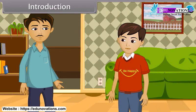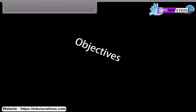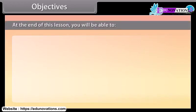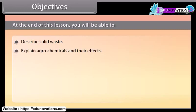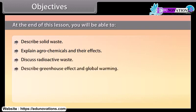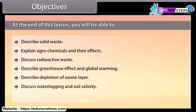In this lesson, you will learn about environmental issues. At the end of this lesson, you'll be able to: describe solid waste, explain agrochemicals and their effects, discuss radioactive waste, describe greenhouse effect and global warming, describe depletion of ozone layer, discuss waterlogging and soil salinity, and explain deforestation.